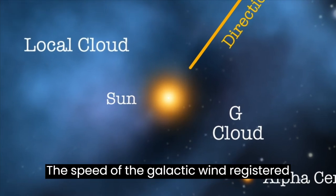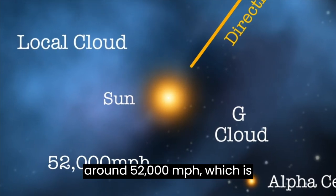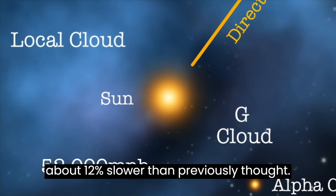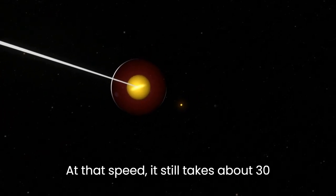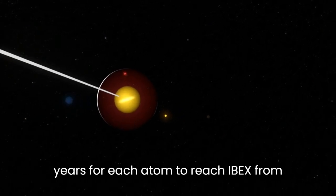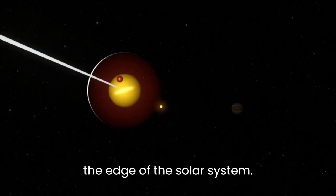The speed of the galactic wind registered around 52,000 miles per hour, which is about 12% slower than previously thought. At that speed, it still takes about 30 years for each atom to reach IBEX from the edge of the solar system.